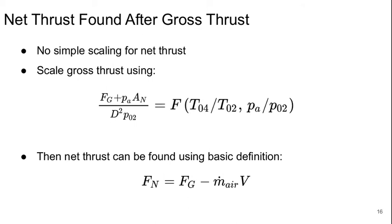Now, there's no simple way of scaling for the net thrust. So basically we have to scale our gross thrust using our non-dimensional parameters. So we've got this parameter for gross thrust and it depends on T0.4 over T0.2 and P0.2 in general. And then the net thrust is going to be found just from its basic definition that it's the gross thrust minus the mass flow rate times the flight velocity. So unfortunately there's no simple way of doing dimensional scaling for that.